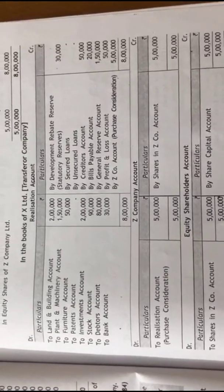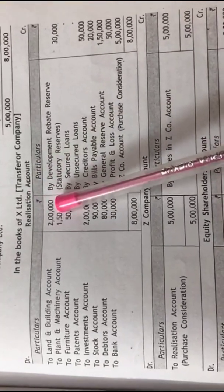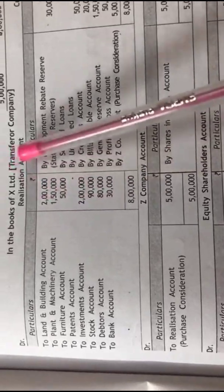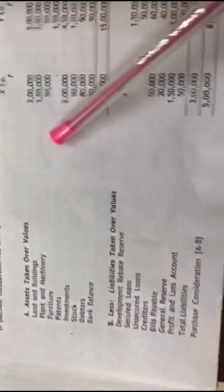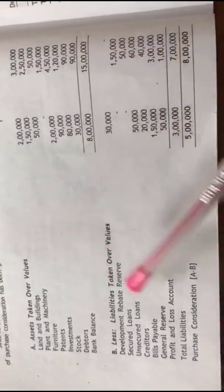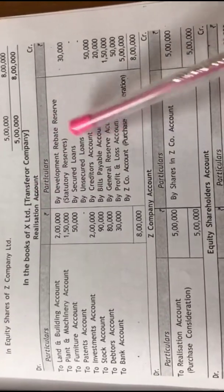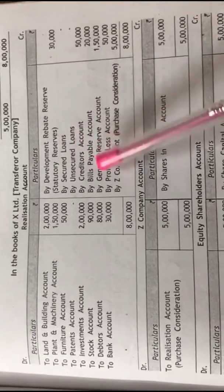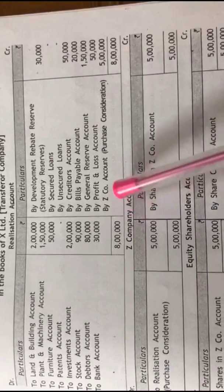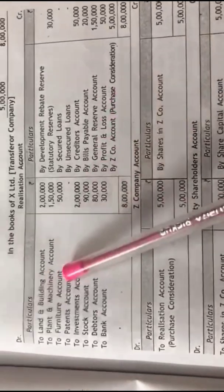The third step is preparation of ledger accounts in the books of X Limited. The first ledger account is the realization account. The first item to be transferred is the transfer of assets — realization account Dr. to concerned assets account. You can look into the PC calculation for reference: whatever assets and liabilities shown there, the same must be written in the realization account. On the credit side, buy liabilities taken over — development reserve, statutory reserve, secured loans, etc. For PC due, the entry is Z company account Dr. for 5 lakh. Balance the account — here we have neither realization profit nor loss.